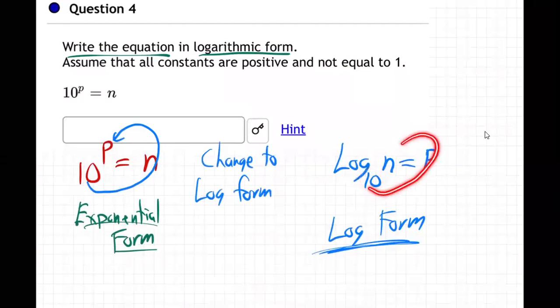You can double check it's right. 10 to the p is n. There we go. It's just that quick and easy. Thank you.